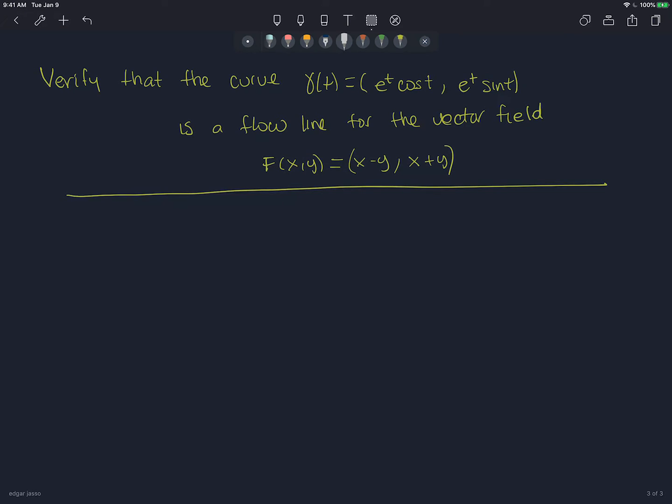So the definition of a flow line is that gamma is a flow line basically if the derivative at each point of gamma is the same as the arrow you get from f at that point. So this is what we need to check. We need to check that this happens. And if it happens, it is a flow line. If it doesn't happen, it's not.